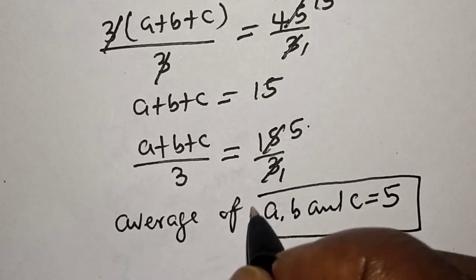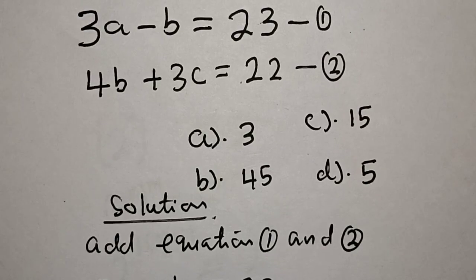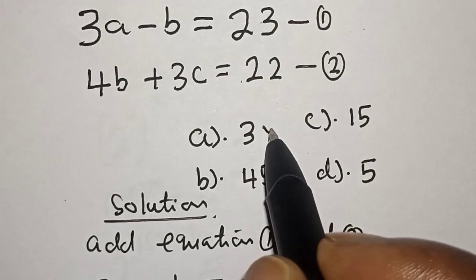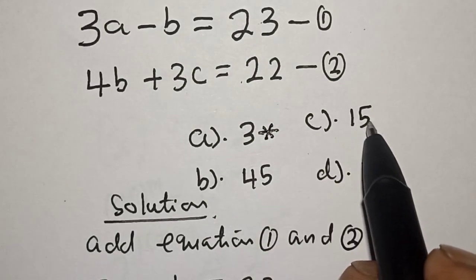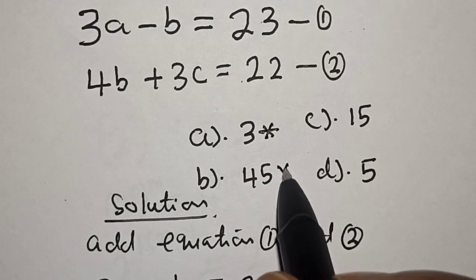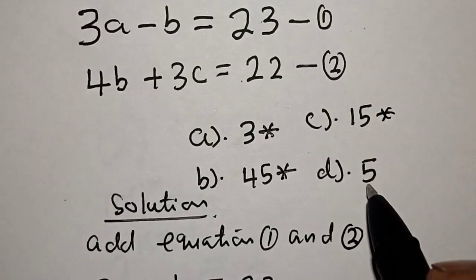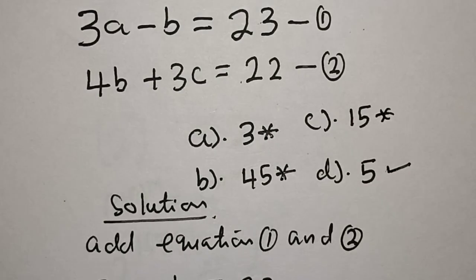So, let's see the correct option. Option A is equal to 3, no. B is equal to 45, no. C is equal to 15, no. And D is equal to 5. That is the correct option.